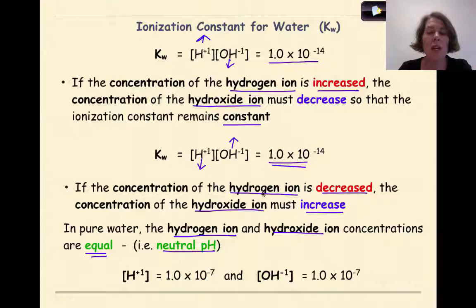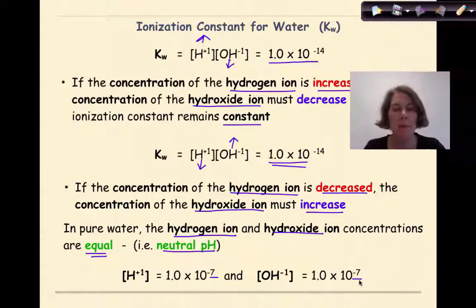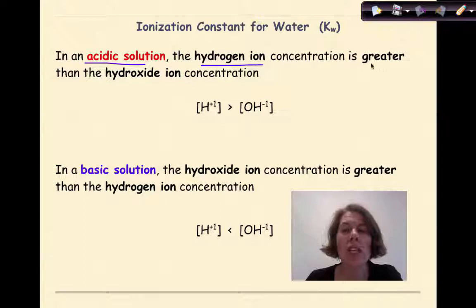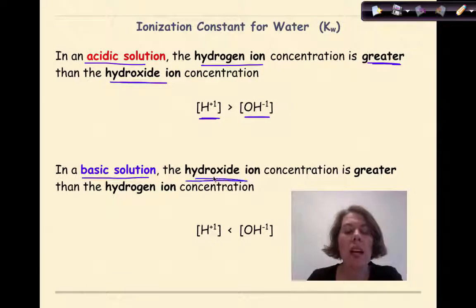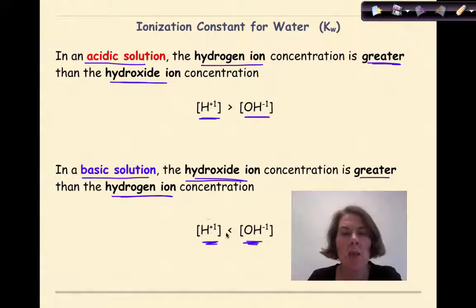If we take 1 times 10 to the negative 14 and split it, that means the hydrogen ion concentration equals 1 times 10 to the negative 7, and the hydroxide ion concentration also equals 1 times 10 to the negative 7. In an acidic solution, the hydrogen ion concentration is greater than the hydroxide ion concentration. In a basic solution, the hydroxide ion concentration is greater than the hydrogen ion concentration, but these concentrations when multiplied together must always equal 1 times 10 to the negative 14.